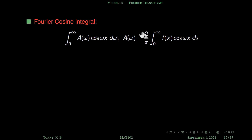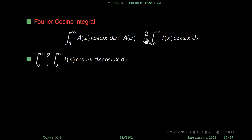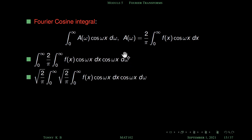If you substitute A(ω) by its representation, this integral becomes: from 0 to infinity, instead of A(ω) we substitute the quantity (2/π) times the integral from 0 to infinity of f(x) cos(ωx) dx, multiplied by cos(ωx) dω.